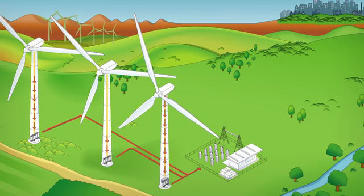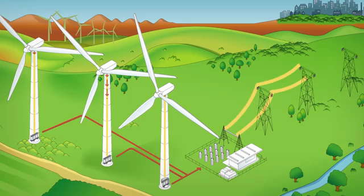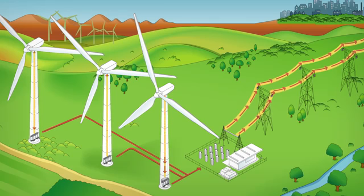From each turbine, alternating current is sent to the substation through underground cables. Here, the voltage is increased again to feed it into the power grid and transport it to end consumers.